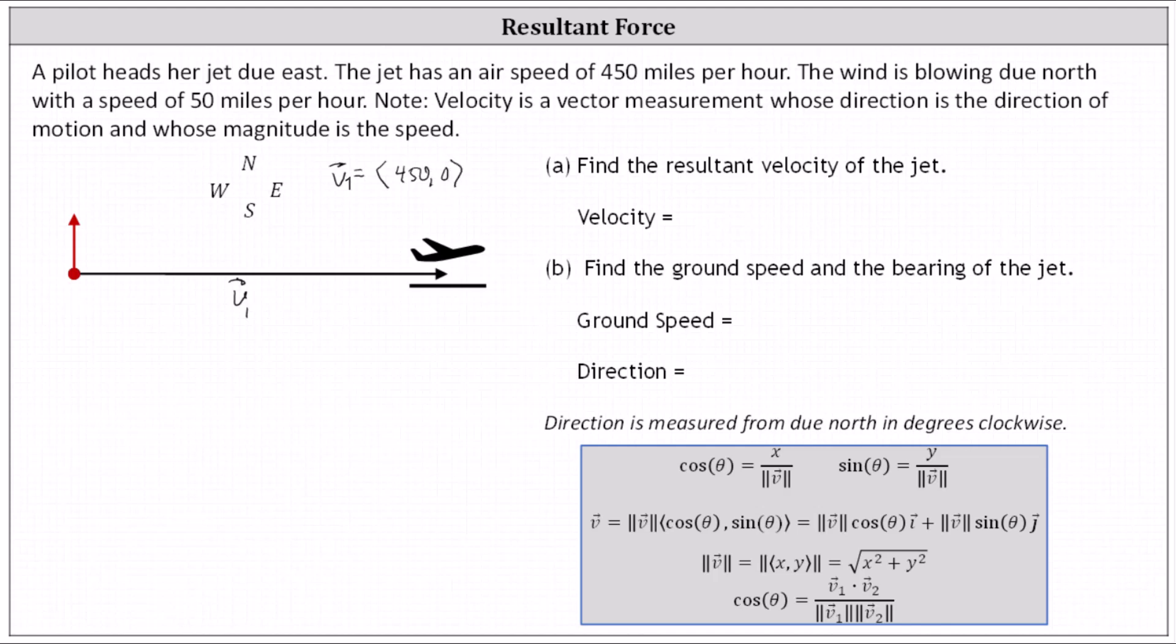We can use the red vector for the velocity of the wind. Notice it's pointing due north, and because the speed is 50 miles per hour, we know the magnitude is 50. Let's call this vector v sub two. Vector v sub two has an x component of zero and a y component of 50.